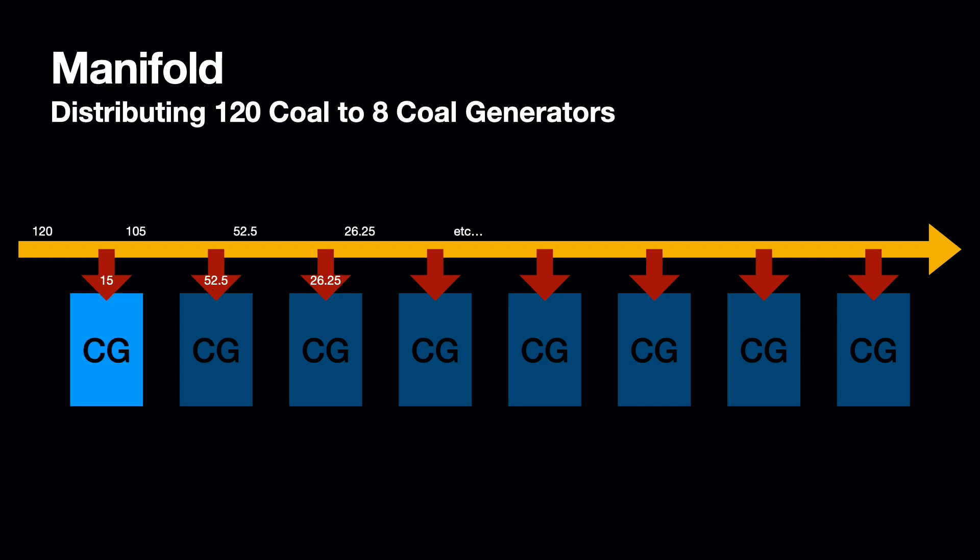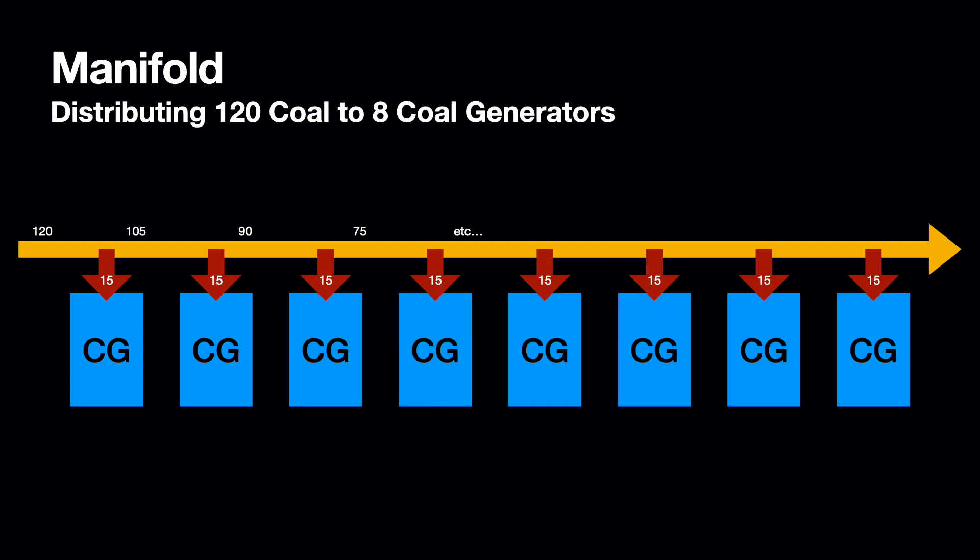However, that only continues until the machines start getting saturated with ingredients. As coal generator number one gets full it starts to only accept its normal burn rate of 15 per minute, leaving 105 per minute further down the line. Once the second generator is saturated it also accepts only 15 per minute, and so on. Given enough time all generators will be full and receive their equal share. So because both methods eventually distribute materials evenly, the manifold is usually enough — and it is far more simple to build than a load balancer.